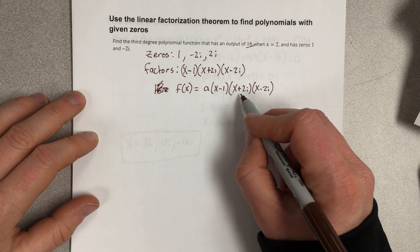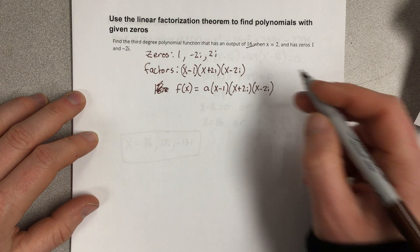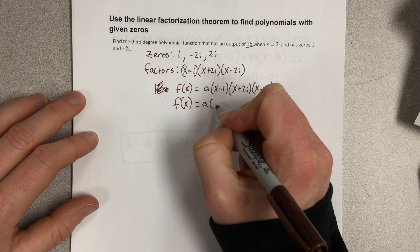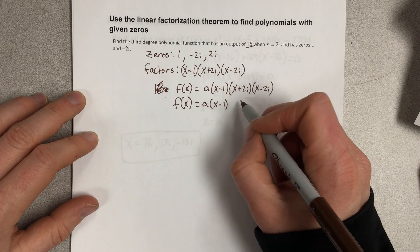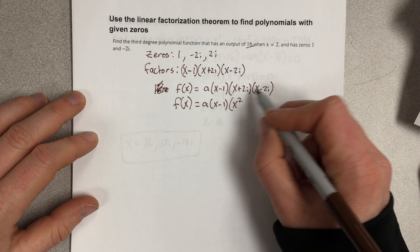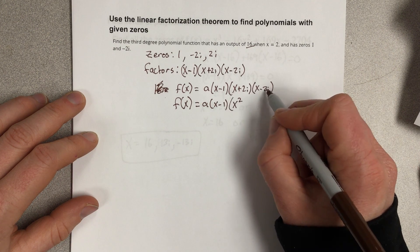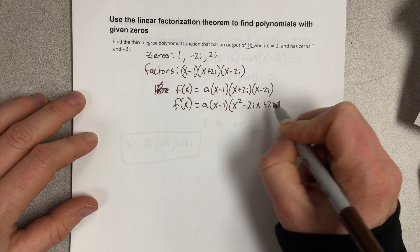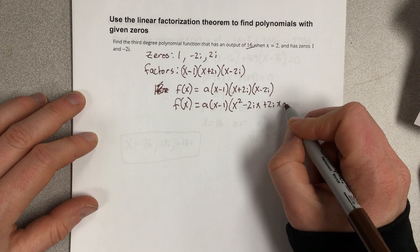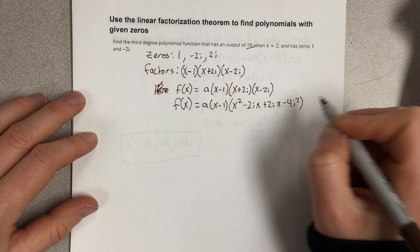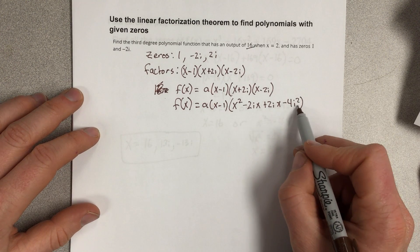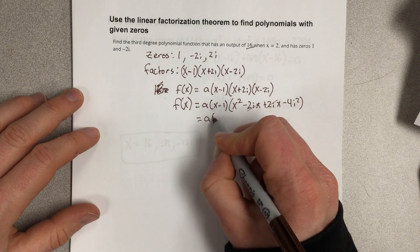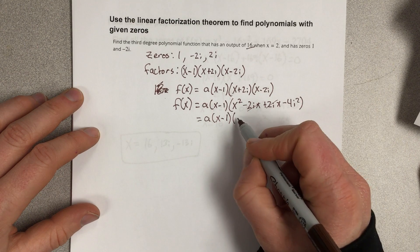Now what I would do is I'd probably multiply this x plus 2i and x minus 2i piece to get this into a better looking form. So f of x equals a x minus 1. If I multiply x plus 2i, I get x squared, x times x, x times negative 2i, so that's negative 2ix. 2i times x, that's positive 2ix. And then 2i times negative 2i, well, that'd be negative 4i squared. Remember, i squared is negative 1, so that's really just positive 4, and these two things cancel. So I end up with a x minus 1 times x squared plus 4.